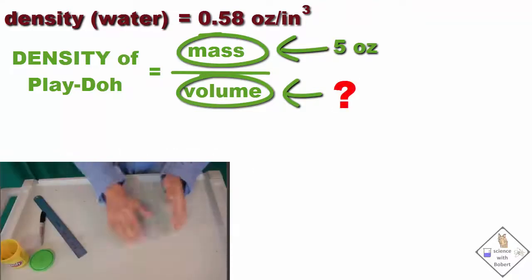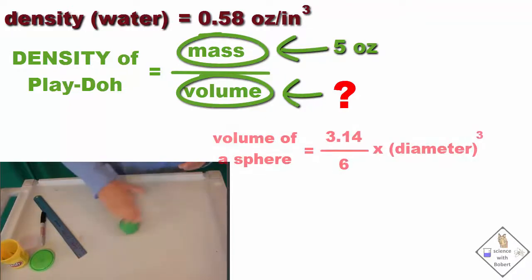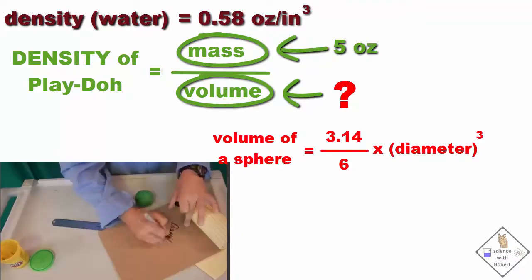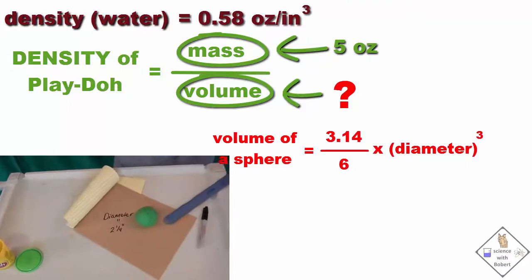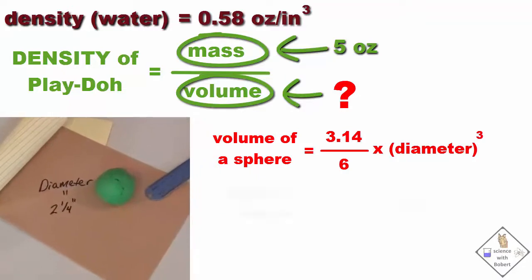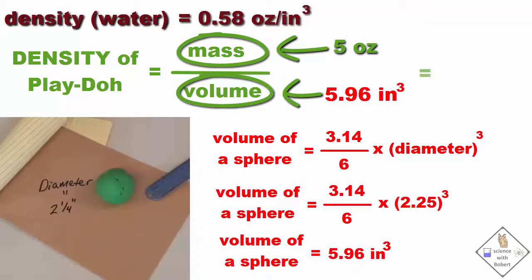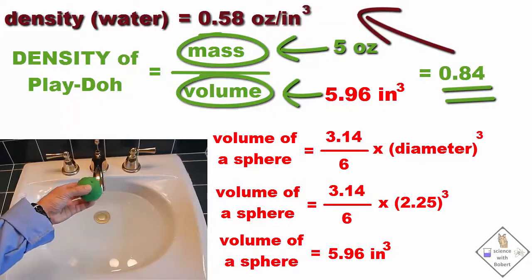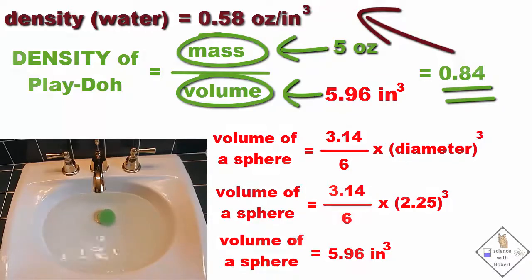It's easy to roll Play-doh into a sphere, and the equation for the volume of a sphere is equal to pi over six times the diameter of the sphere cubed. The diameter of a five ounce sphere of Play-doh is two and a quarter inches, or 2.25 inches. So that means the density of our Play-doh is 0.84 ounces per cubic inch. That is larger than the density of water. So if we drop our Play-doh sphere in water, it should sink. Yep, it does.